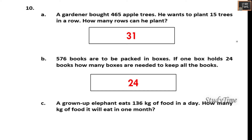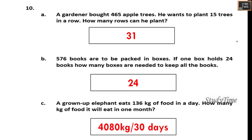A grown-up elephant eats 136 kg of food in a day. How many kg of food will it eat in one month? In one month it will eat 4080 kg, if the number of days is 30.